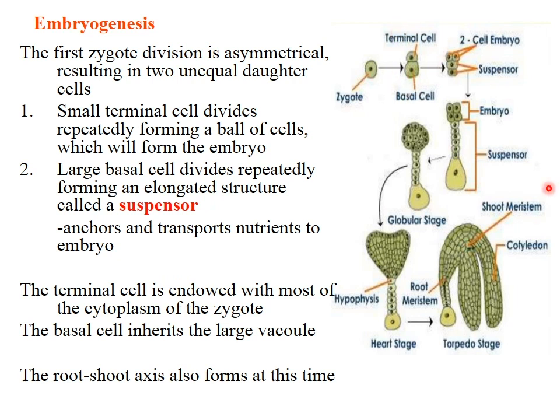The zygote undergoes an asymmetric transverse cell division that gives rise to two cells. The first is the terminal cell — it's on the top and contains most of the cytoplasm. The aqueous substances are found within the cell from the original zygote. It will later form hypocotyl, shoot apical meristem, and cotyledon.